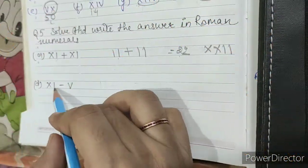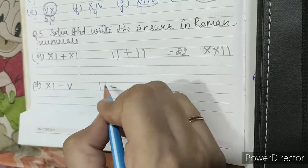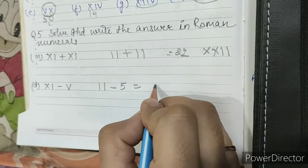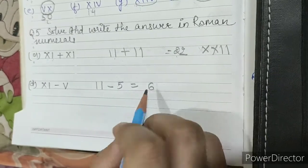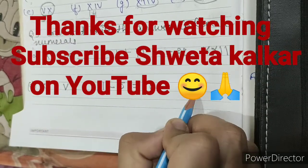Part D: XI. XI is 11 minus V is 5. So 11 minus 5 is 6. So we will write 6 in Roman number as VI.